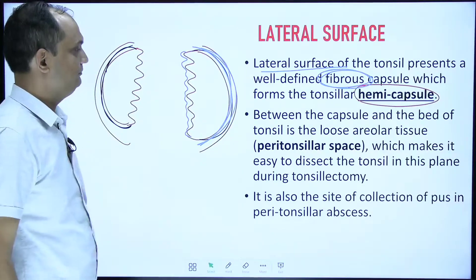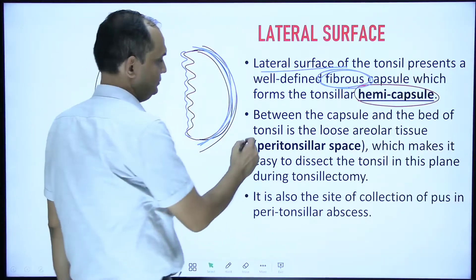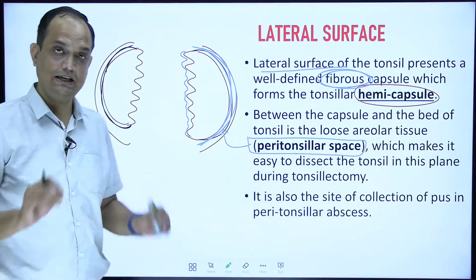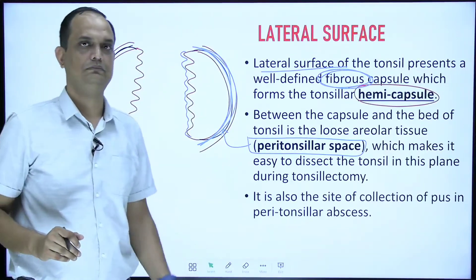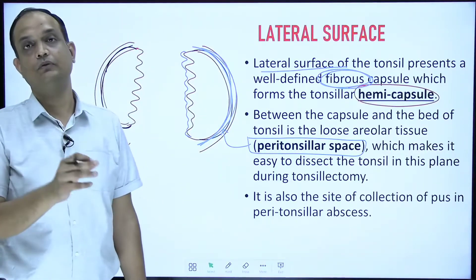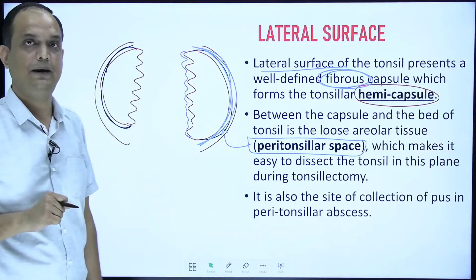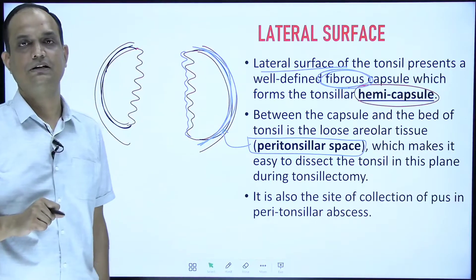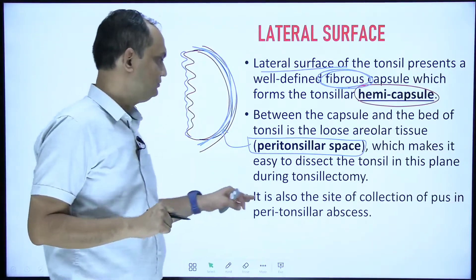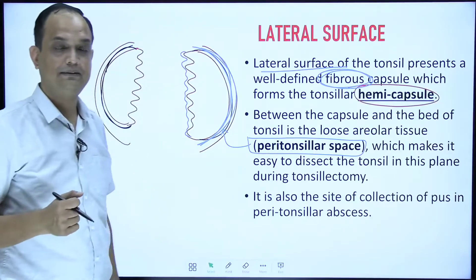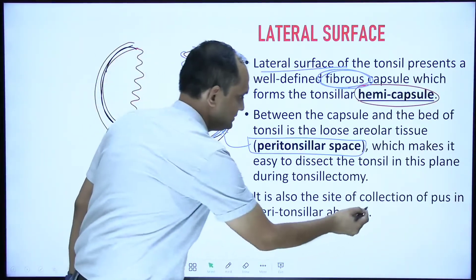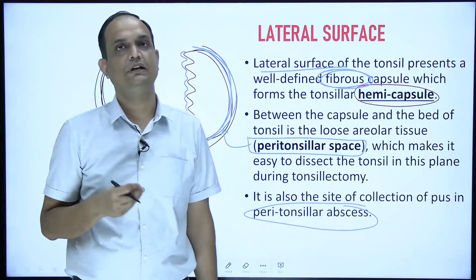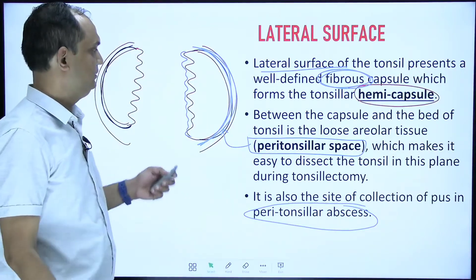Between the capsule and the bed of the tonsil, there is a loose connective tissue space known as the peritonsillar space. This space is used for dissection during tonsillectomy — the removal of the tonsil from the tonsillar bed. It is also the site of pus collection known as peritonsillar abscess. The most important feature of the lateral surface is the hemicapsule of the tonsil.